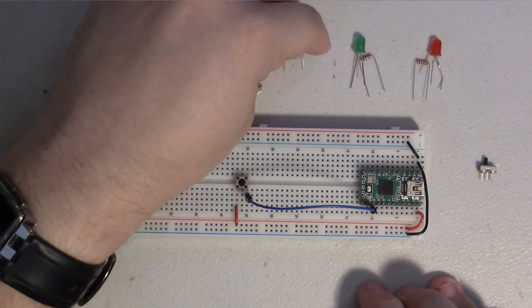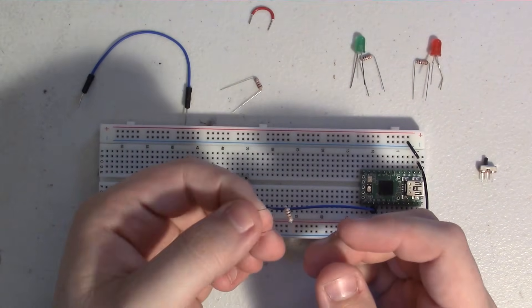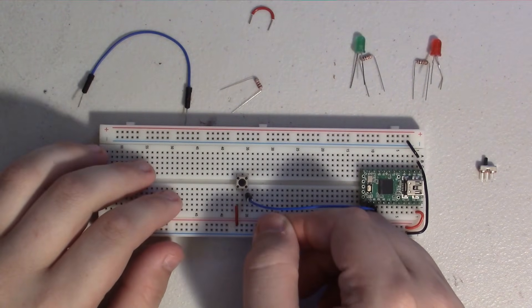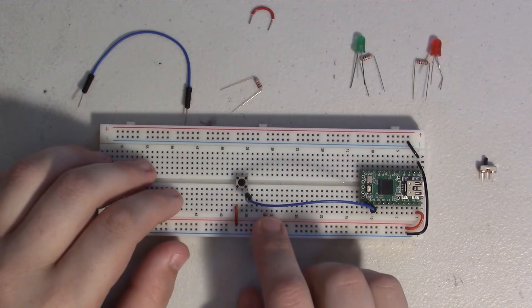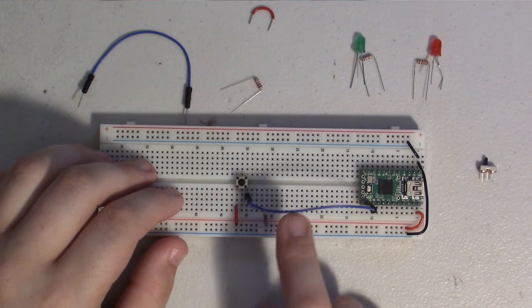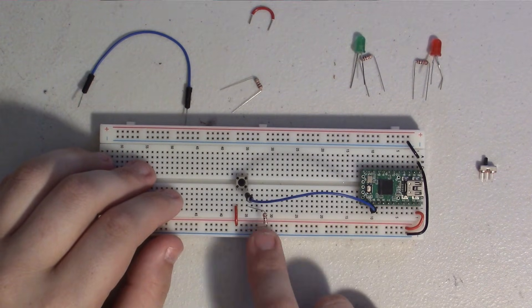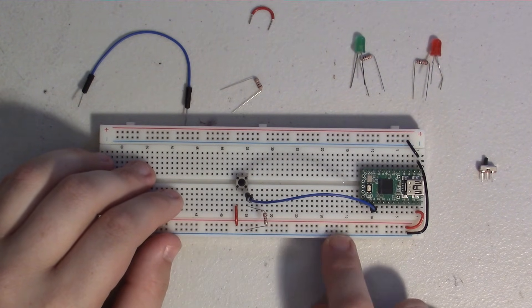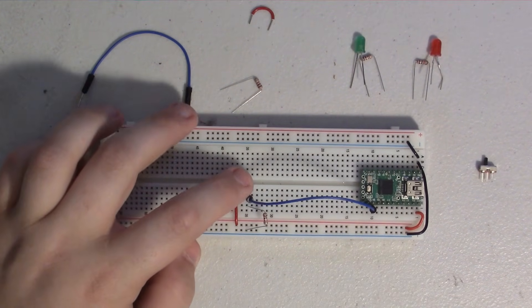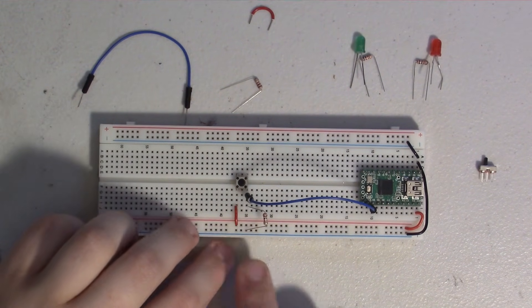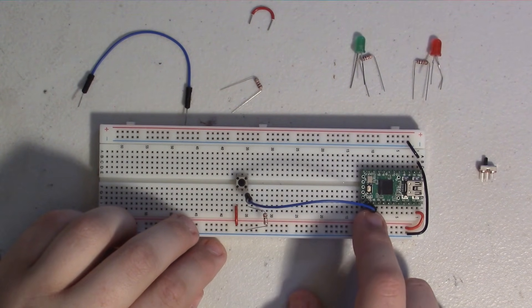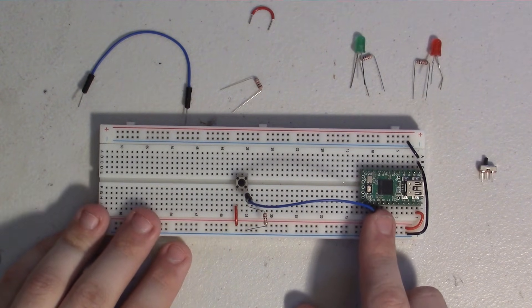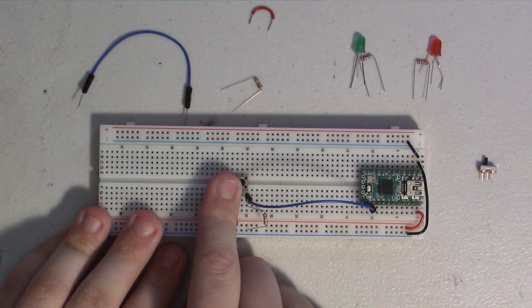So what we do is we use a resistor—this is a 1k resistor—and we connect it on the same column that we have our button connected on to our pin, and we connect it to ground. So now when the button isn't being pressed, there is a slight connection here to ground through this resistor, and this will basically force this pin into a state, force it into the low state when the button isn't pressed.